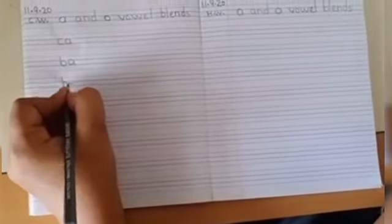First you will write ca. After ca, you will write ba. Next you will write ha.